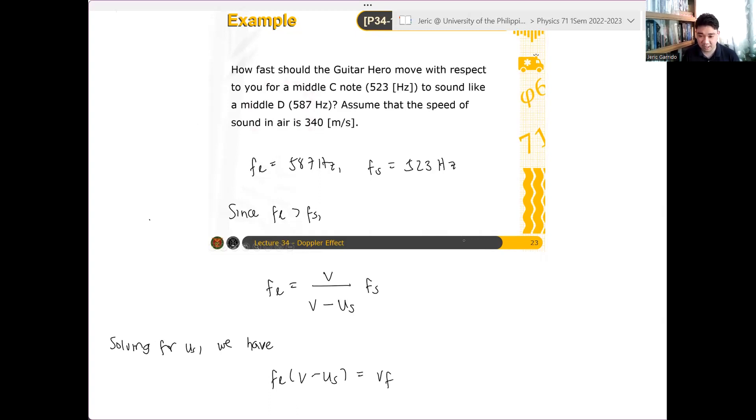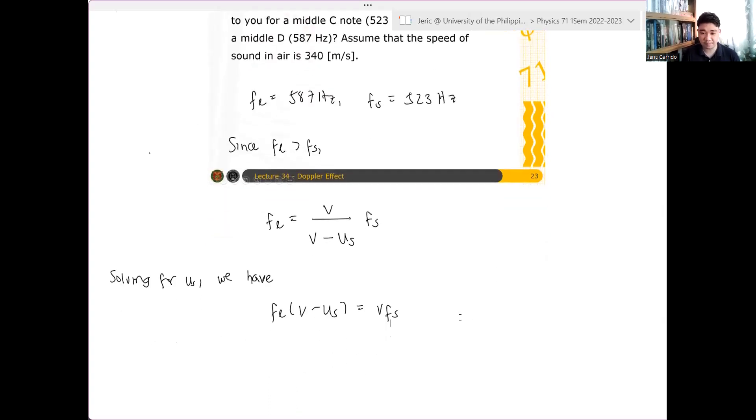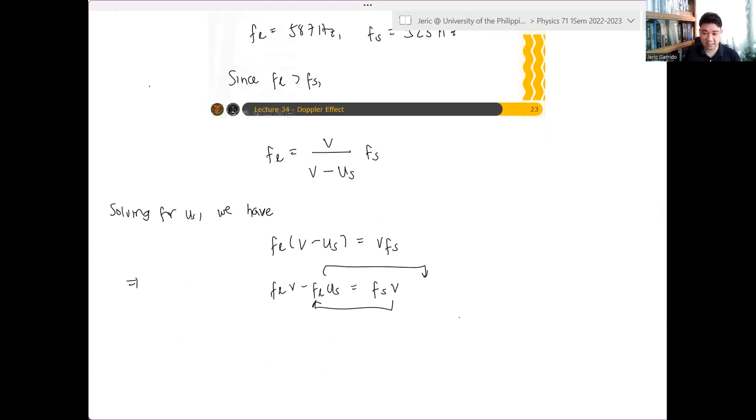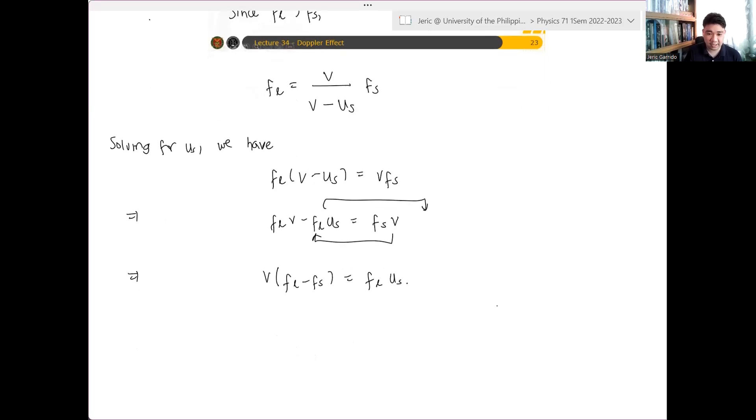Sorry for that. So FL is equal to V is equal to VFS. And therefore, this implies that FLV minus FLUS equals FSV. Lipat ko to dito. Lipat ko to dito. And therefore, I get something like what? So I have a V quantity FL minus FS equals FLUS. And therefore, hence,